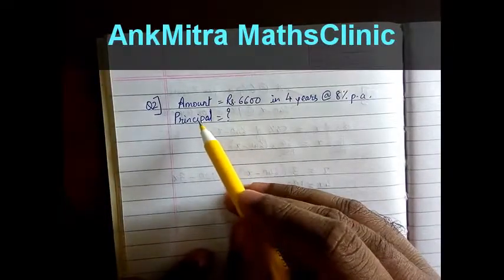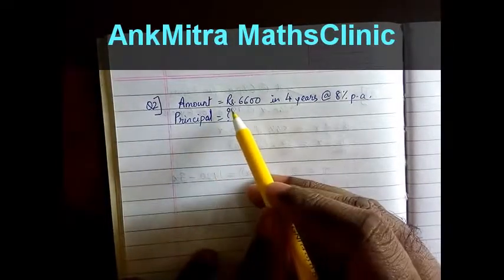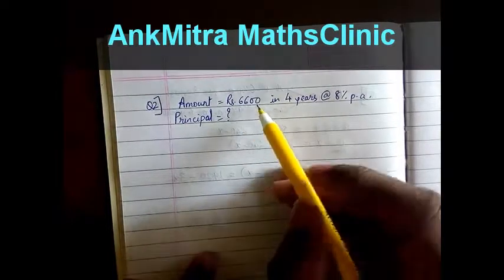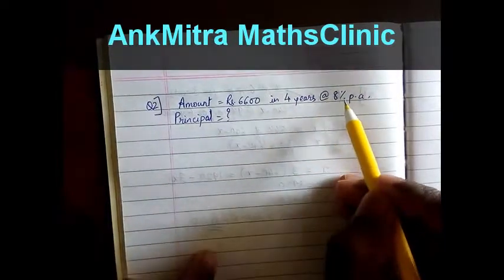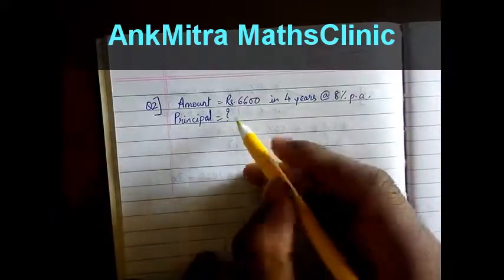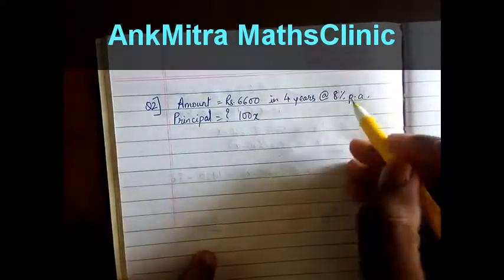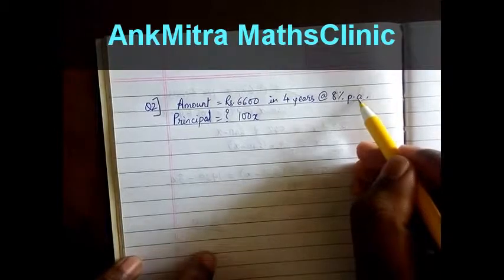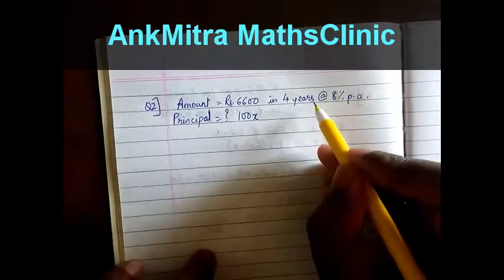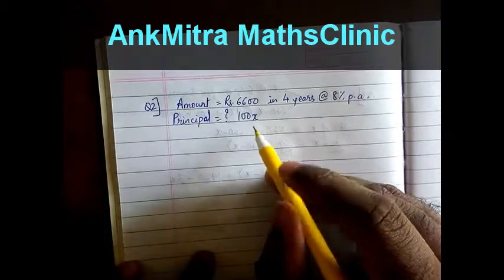In this question, we are asked to find the principal for which the amount is Rs.6600 in 4 years at the rate of 8% per annum. So let us start with the principal of 100x. At 8% per annum in 4 years, it will add 32% to the principal as interest.